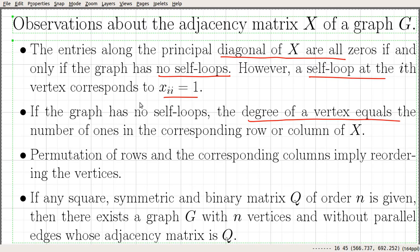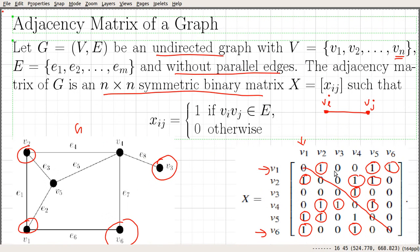If the graph has no self-loops, the degree of a vertex equals the number of ones in the corresponding row or column of X. For example, if you look at the first row — which corresponds to vertex V1 — the number of ones is three, so the degree of V1 equals three. Similarly, if you look at the first column, the number of ones is again three, confirming degree of V1 equals three. If you look at V5, counting the ones in that row also gives three, so the degree of V5 equals three.